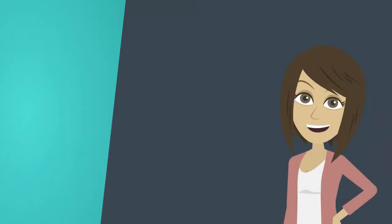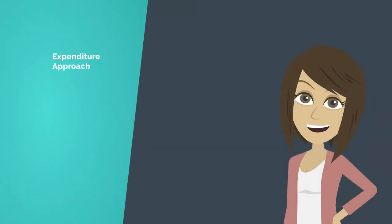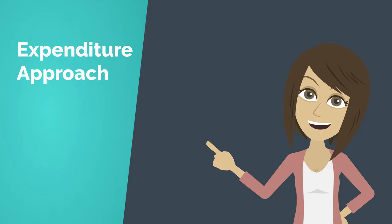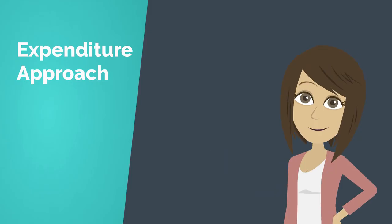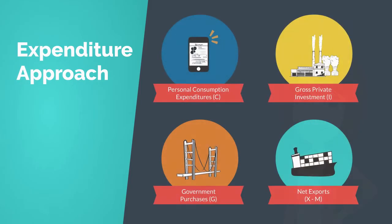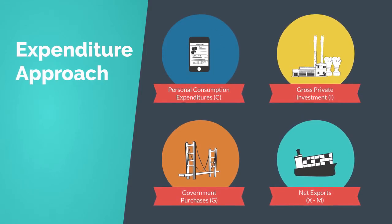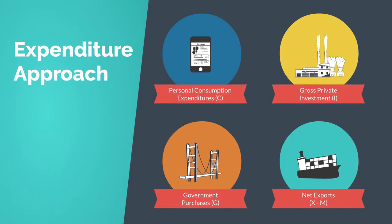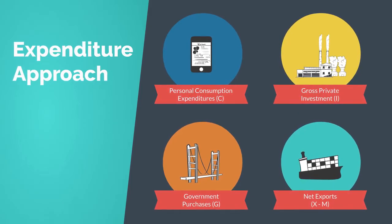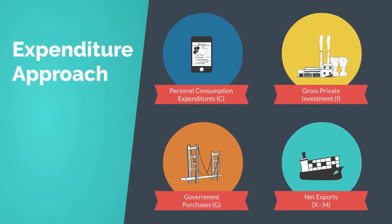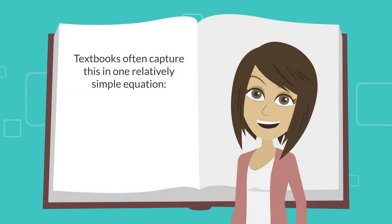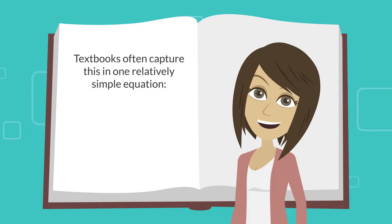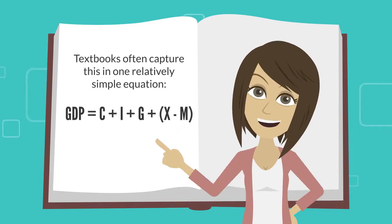The typical treatment of GDP is the expenditure approach, where spending is categorized into the following buckets: personal consumption expenditures, gross private investment, government purchases, and net exports, composed of exports and imports. Textbooks often capture this in one relatively simple equation: GDP equals C plus I plus G plus the sum of X minus M.